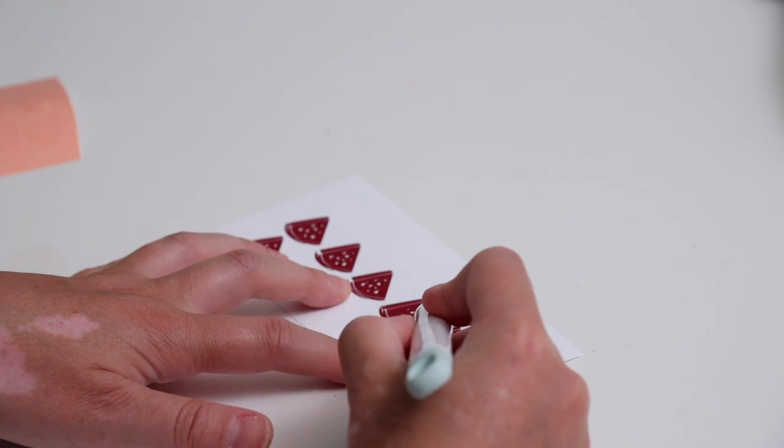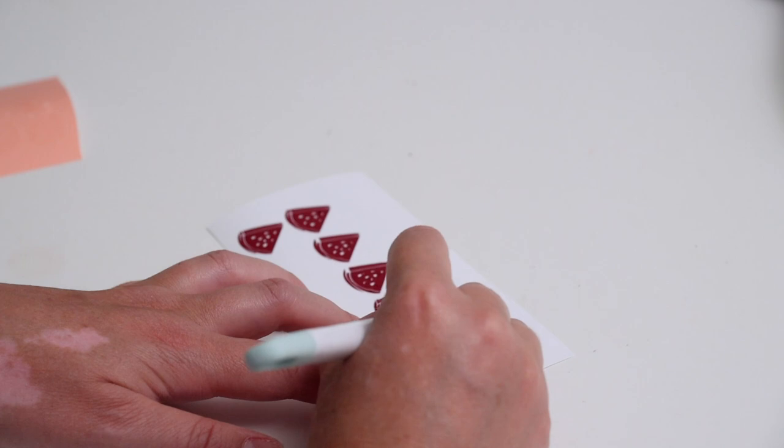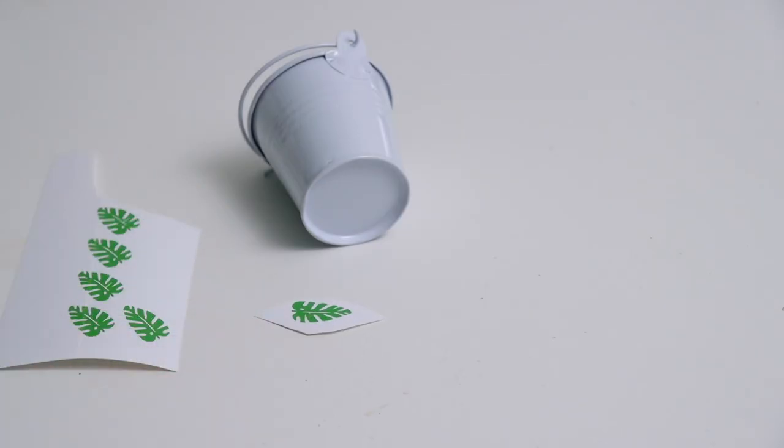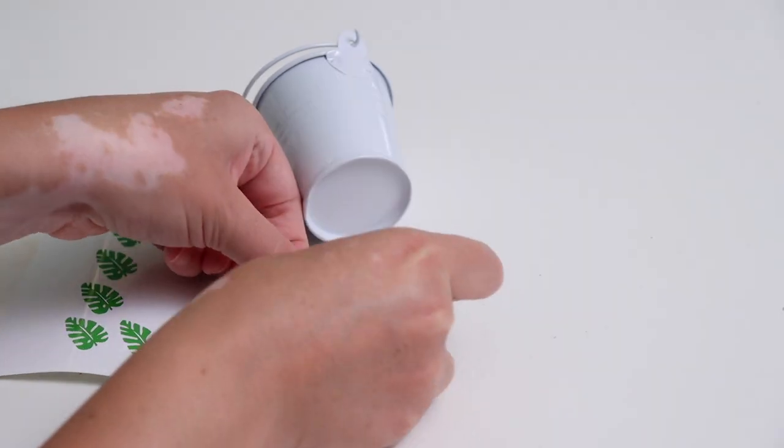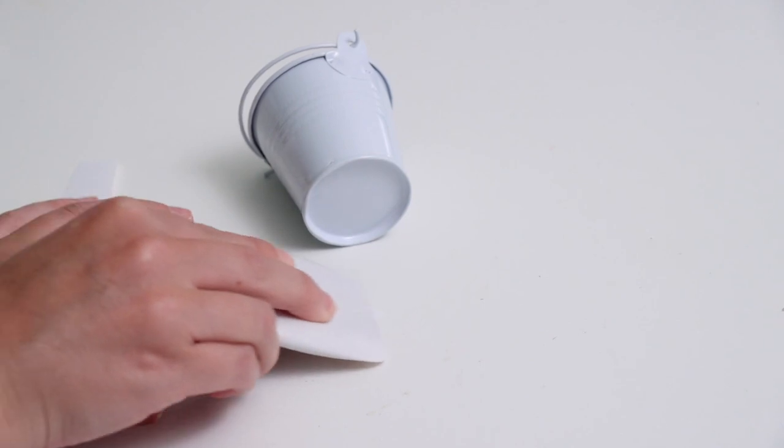So I just used my weeding tool and this took the most amount of time, especially for the watermelon because they had these little tiny circles that needed to be weeded out. So that took a bit of patience, but I finally did get it and now I'm ready to add them to my little pails.